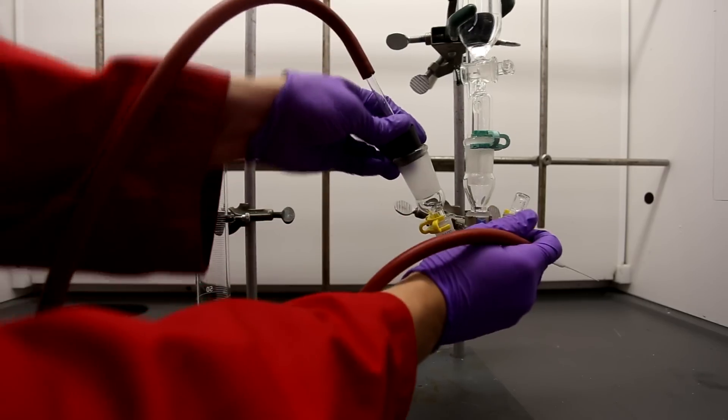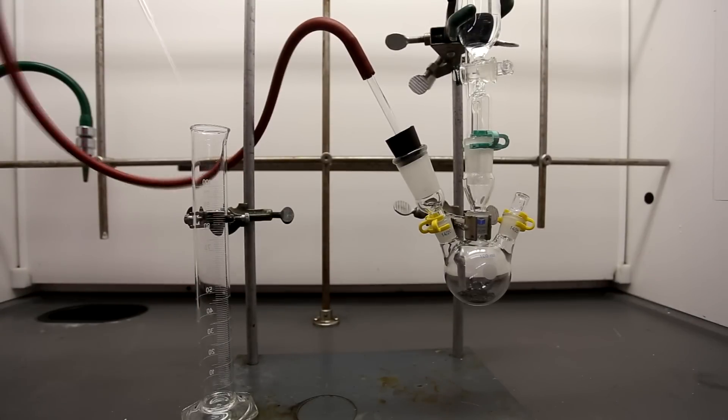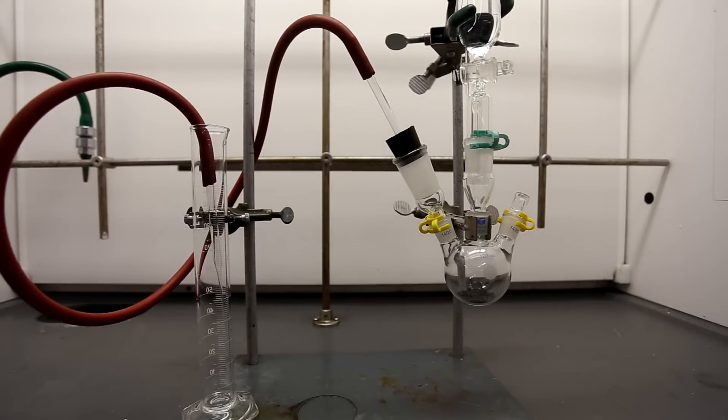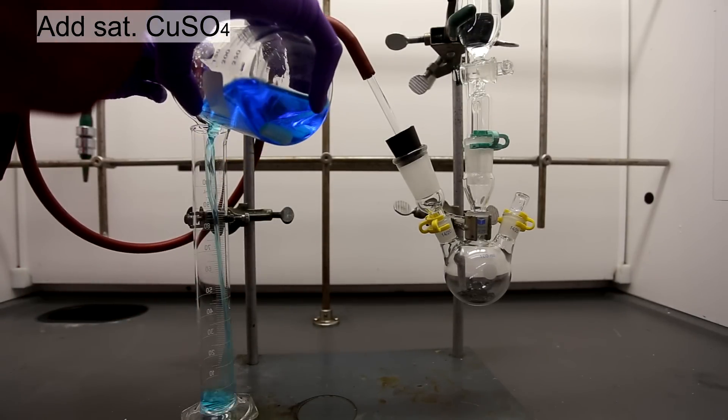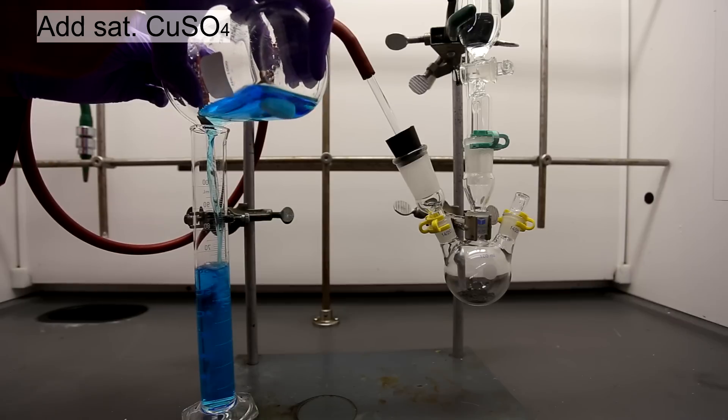A hose is then set up with one end leading into a graduated cylinder. The graduated cylinder is then filled up with some saturated copper sulfate solution.